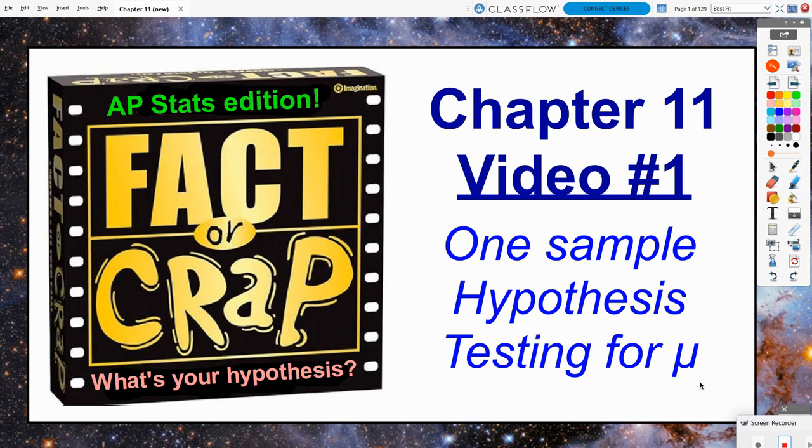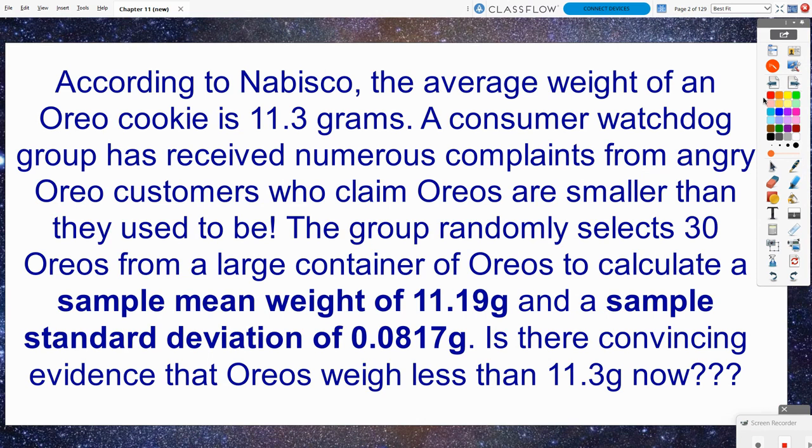Chapter 11, video 1. We are back to hypothesis testing for means this time around. According to Nabisco, the average weight of an Oreo cookie is 11.3 grams. A consumer watchdog group has received numerous complaints from angry Oreo customers who claim Oreos are smaller than they used to be. The group randomly selects 30 Oreos from a large container to calculate a sample mean weight of 11.19 grams and a sample standard deviation of 0.0817 grams. Is there convincing evidence that Oreos weigh less than 11.3 grams now?